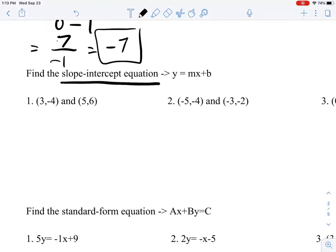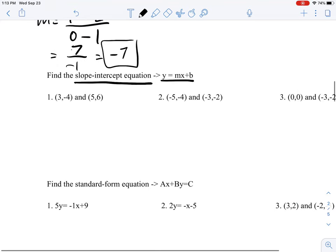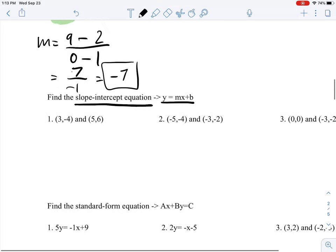Now in this question, it's asking you to find the slope-intercept equation, this one. But we don't have the slope, so we can use what we learned from here to find the slope. m equals y₁ minus y₂ over x₁ minus x₂.